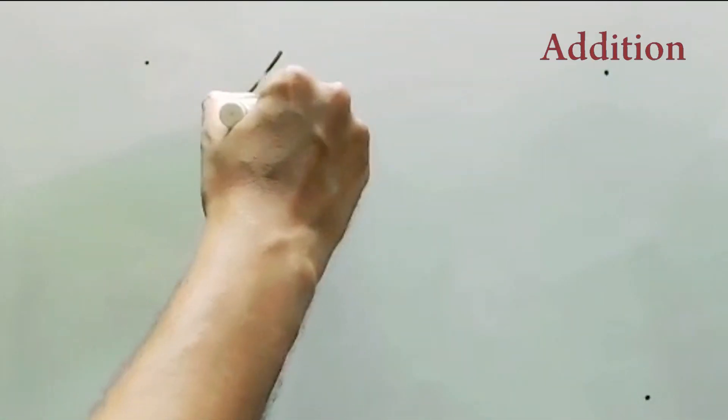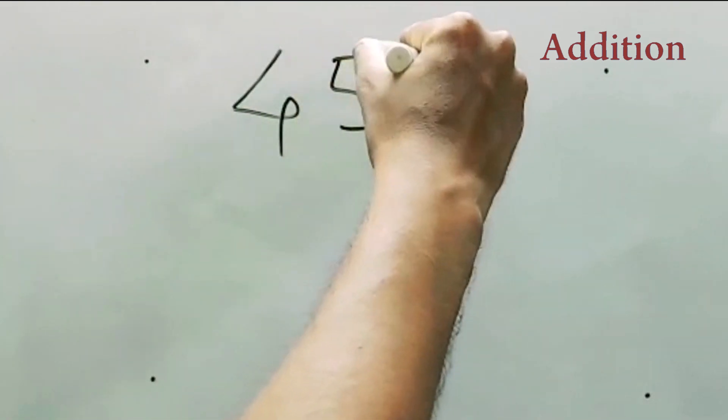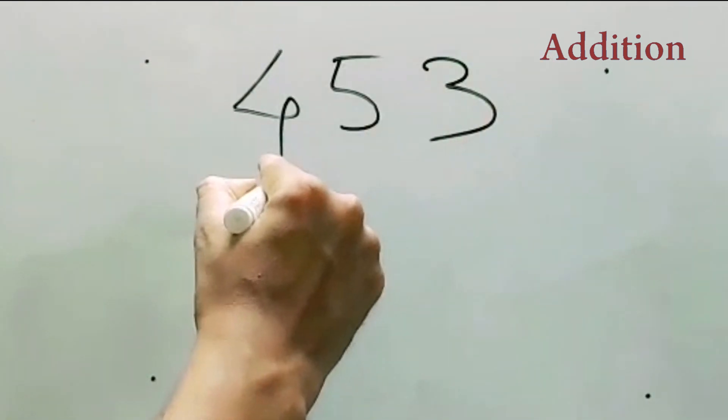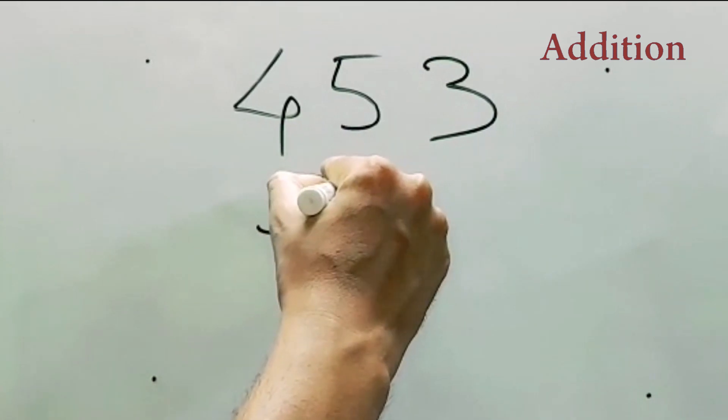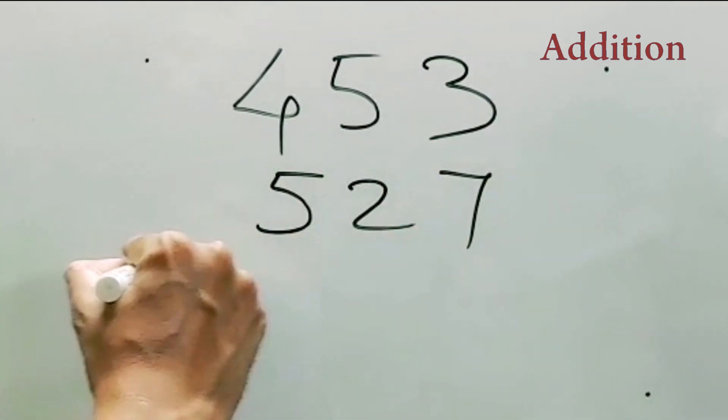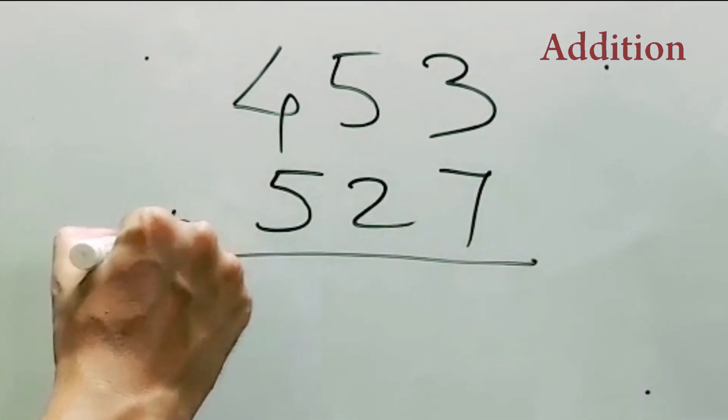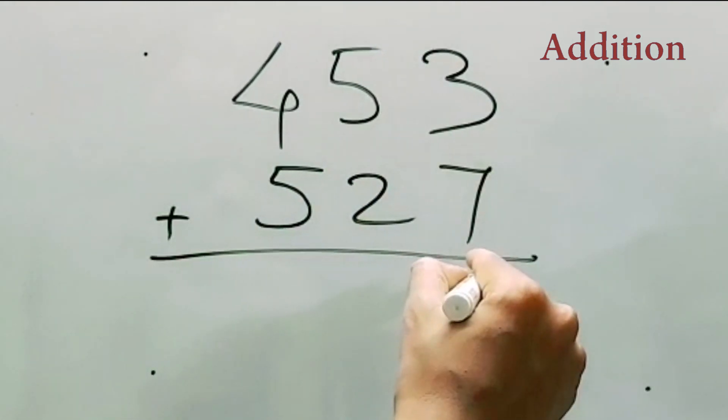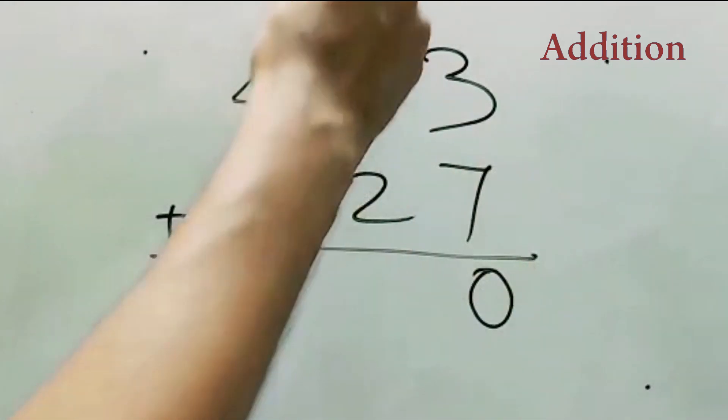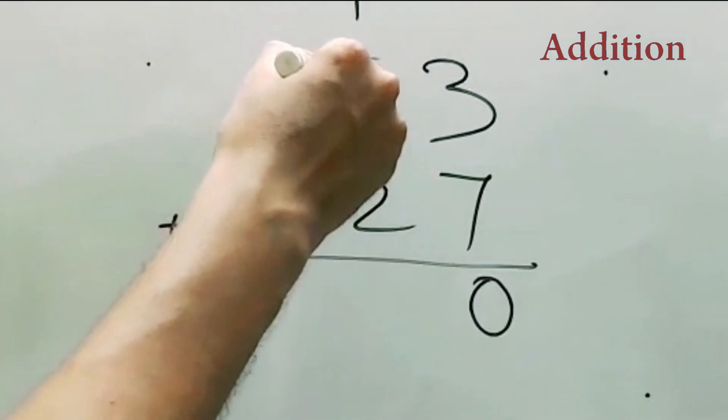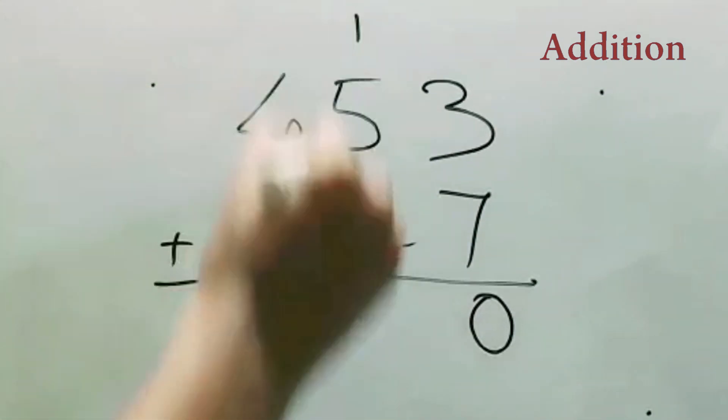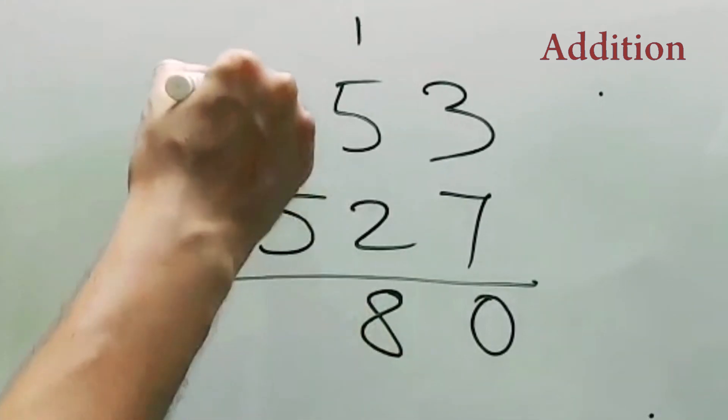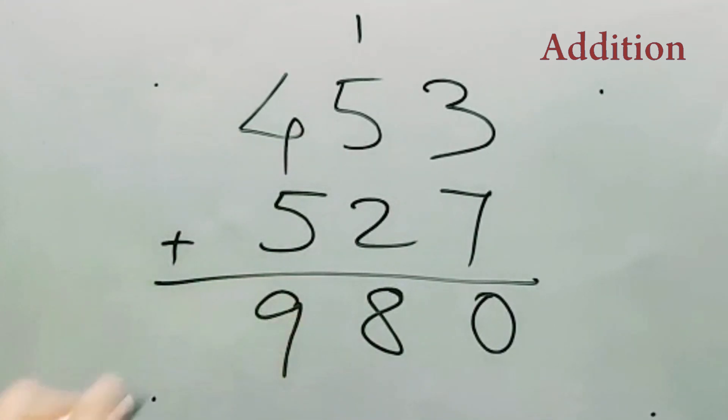Let's try the first one, 453 and 527. So what are we doing? We are doing like 7 plus 3 is 10, so 0, and then 1 has to be carried. And then 5 plus 2 is 7, and then 1 is 8, and then 5 plus 4 is 9. So this is our process.